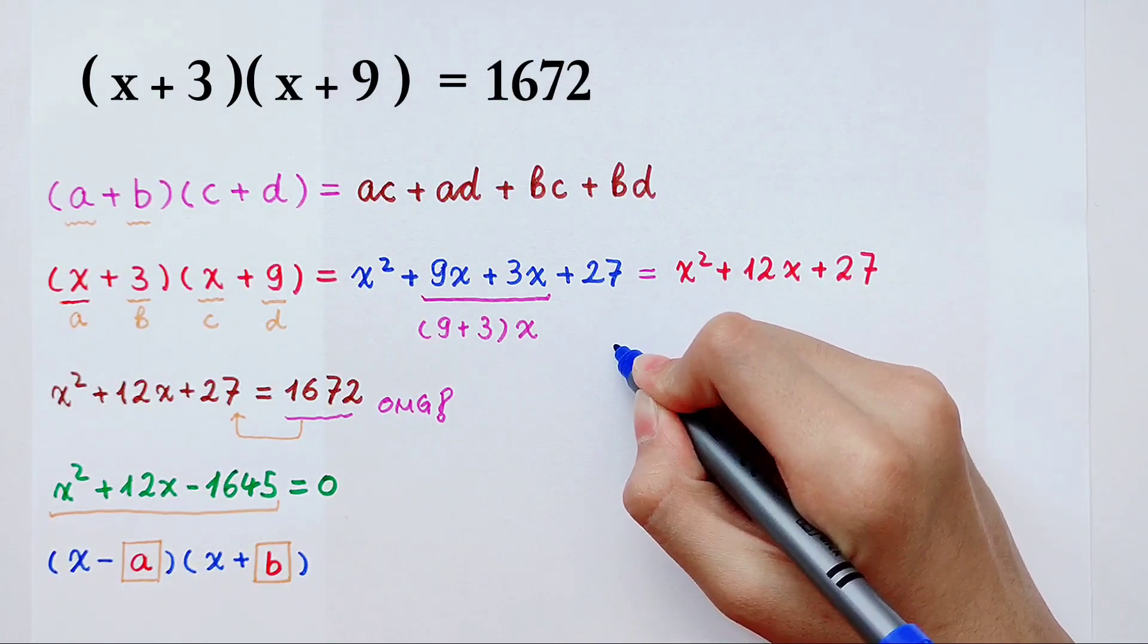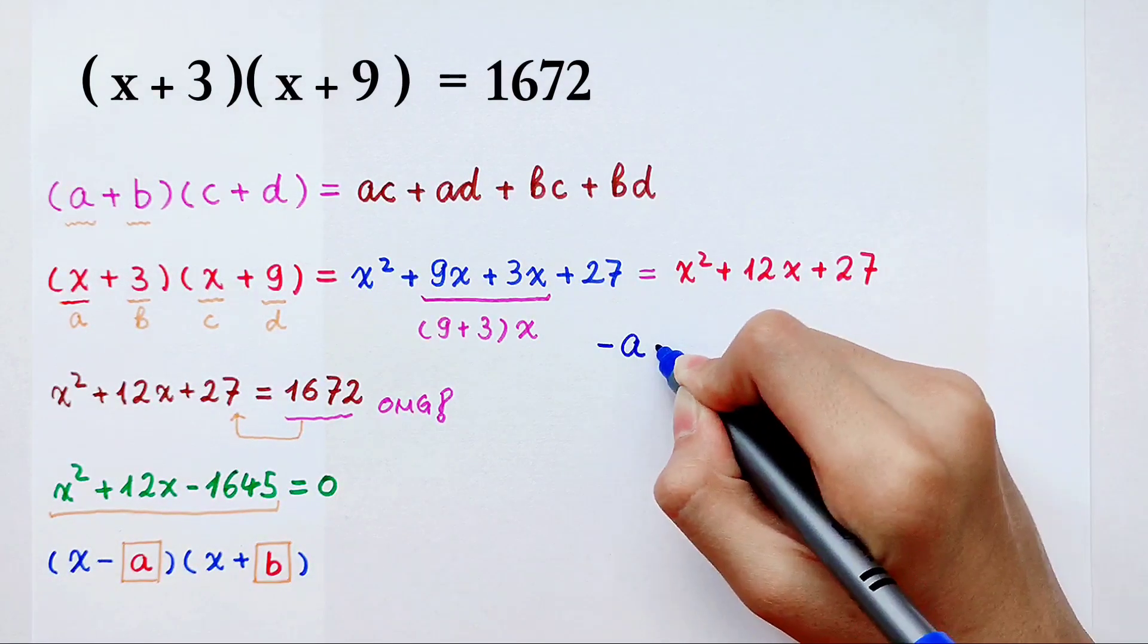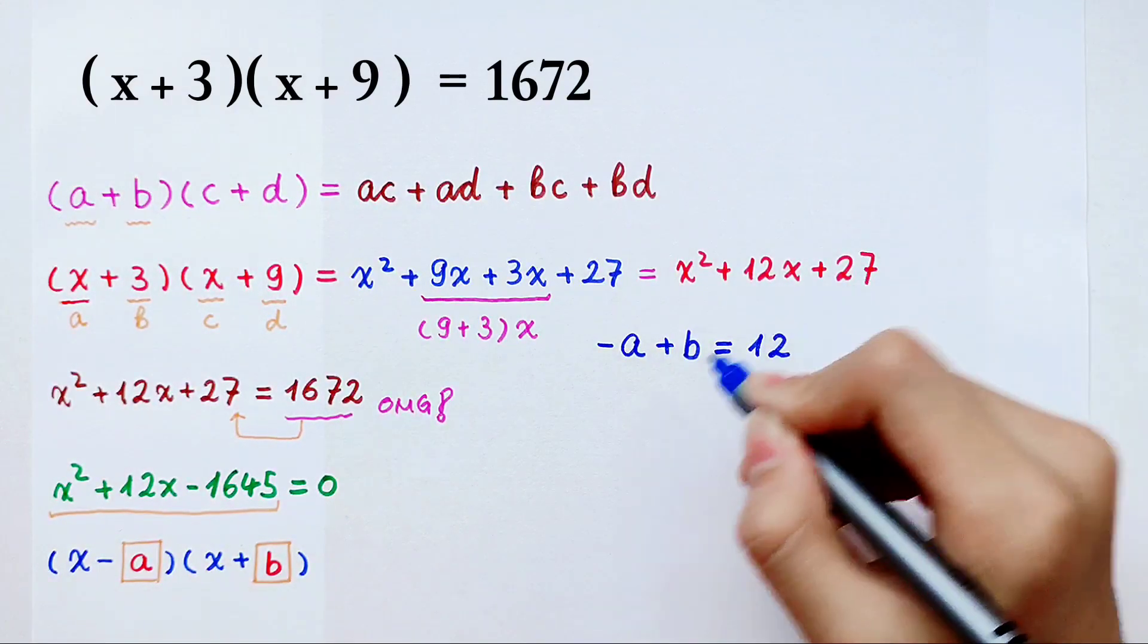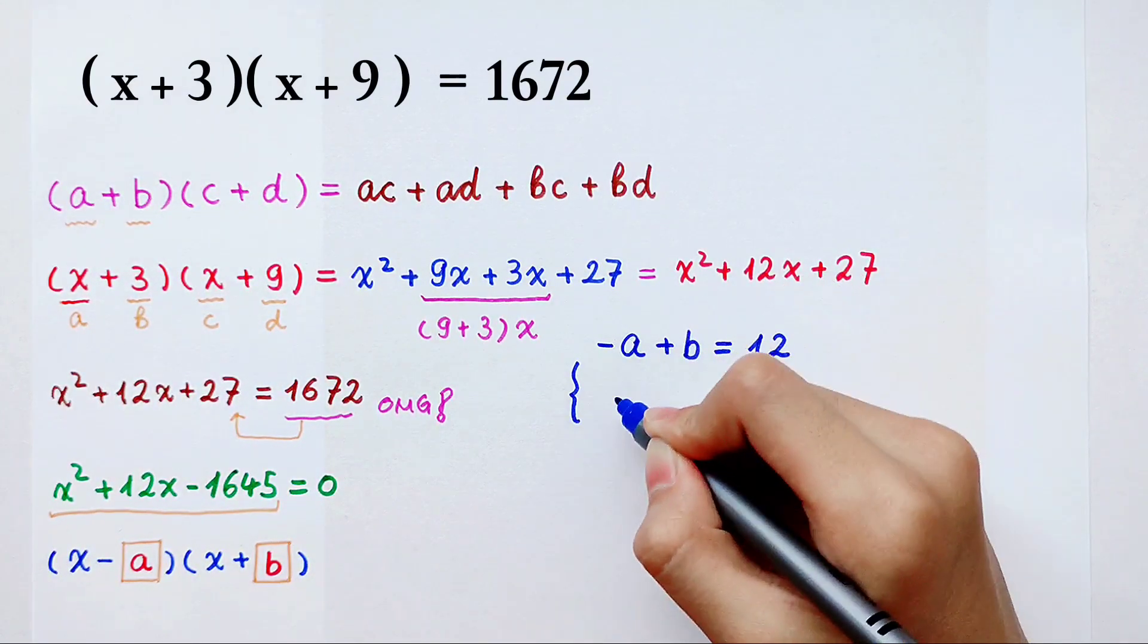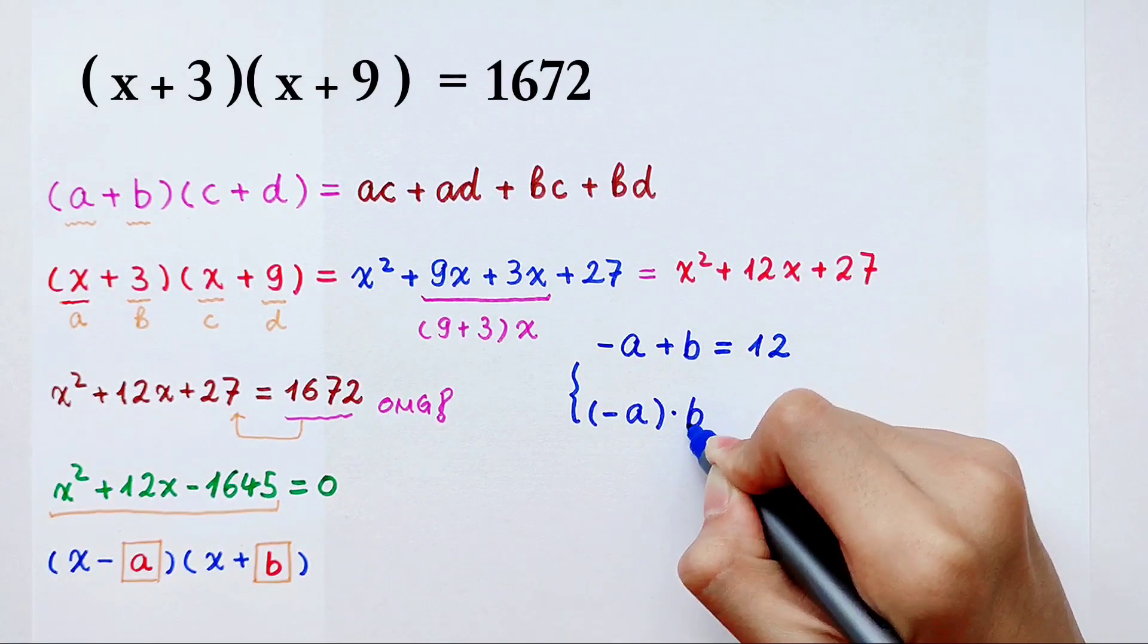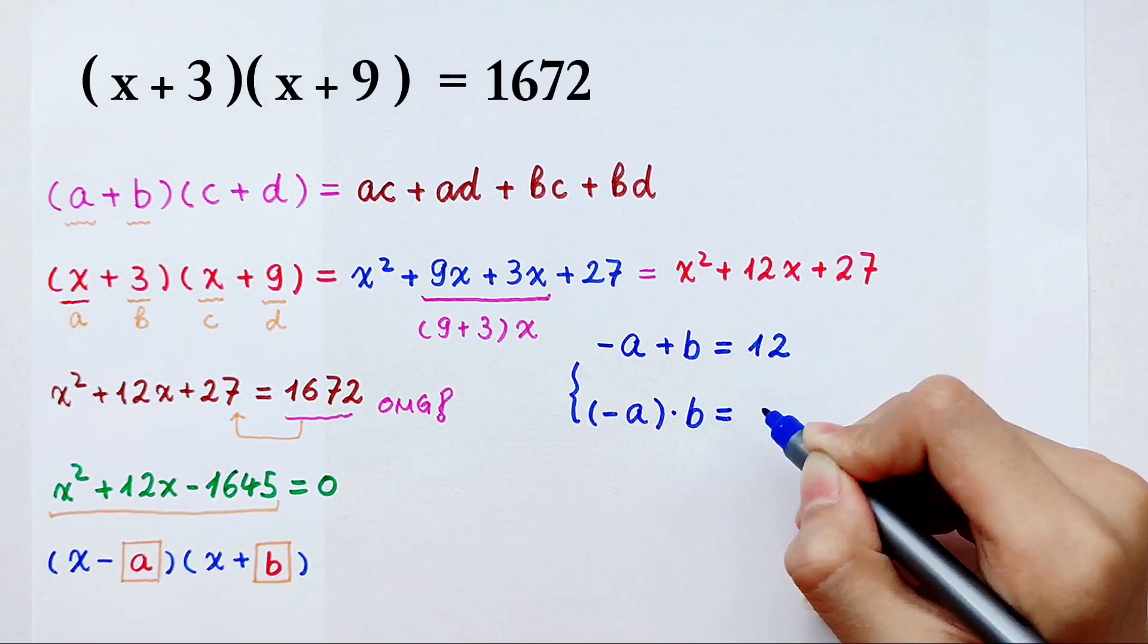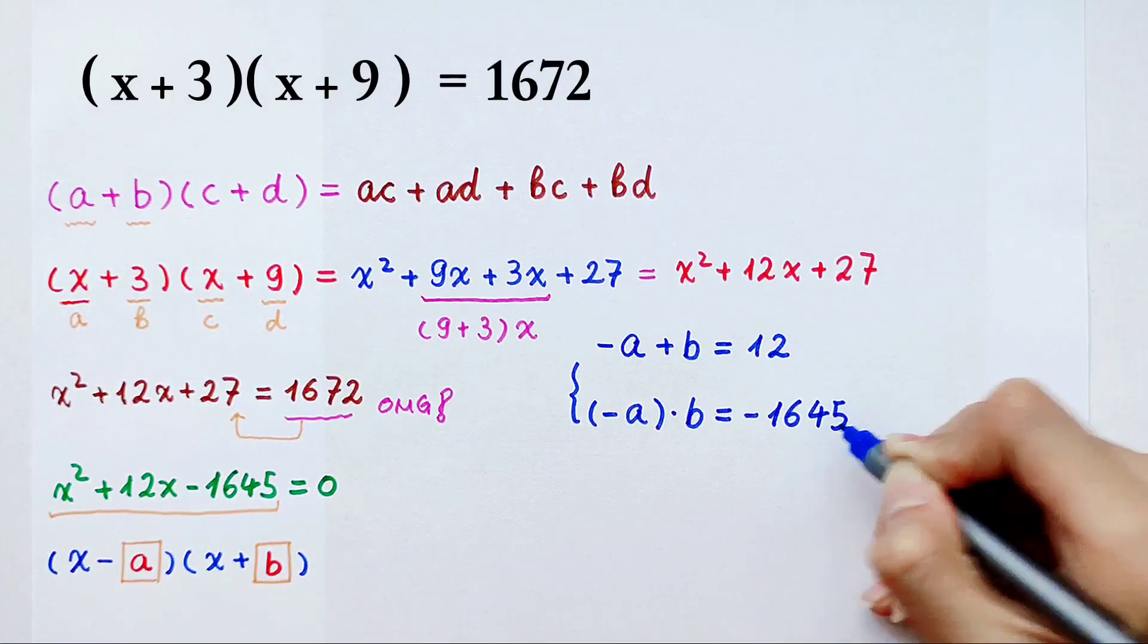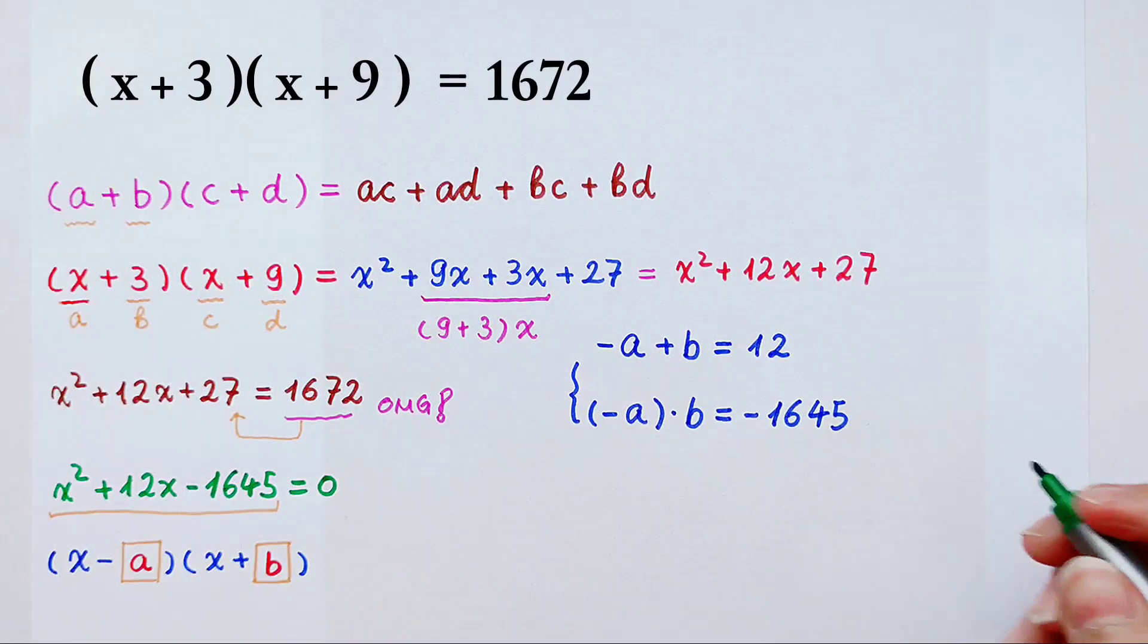So from their sum, negative a then plus b is 12. And their multiplication, negative a then times b, it is negative 1645. So I do some changes.